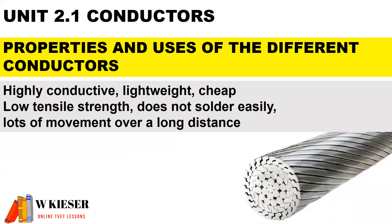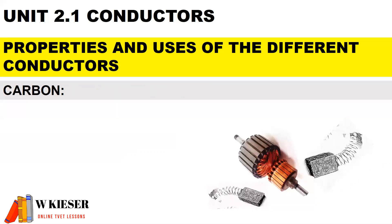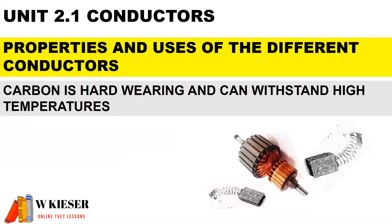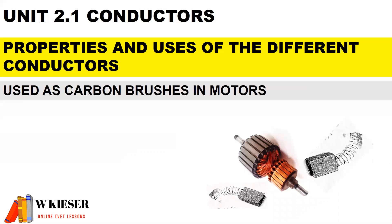However, the disadvantage of aluminum is it has low tensile strength, does not solder easily, and in terms of transmission lines, there is a lot of movement over long distances. For carbon, it is hard wearing and can withstand high temperatures, and is mainly used as carbon brushes inside motors.